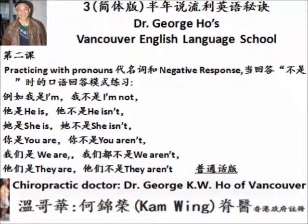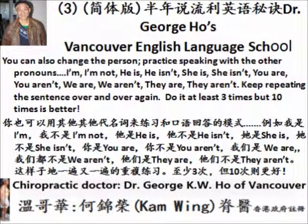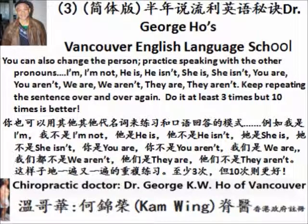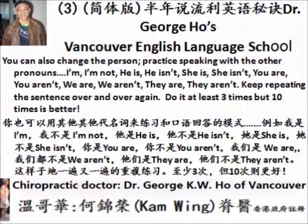Lesson 2 is about practicing with pronouns. When you give a negative response, there are two exercises. You can also change the person and practice speaking with other pronouns: I'm, I'm not, he is, he isn't, she is, she isn't, you are, you aren't, we are, we aren't, they are, they aren't. Keep repeating the sentence over and over again — at least three times, but ten times is better.